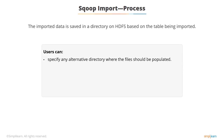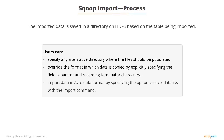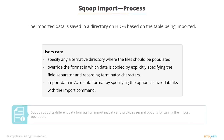By default, these fields contain comma-delimited fields with new lines separating the different records. Users can override the format in which data is copied by explicitly specifying the field separator and record terminator characters. Users can also easily import data in Avro data format by specifying the option as AvroData file with the import command. Sqoop supports different data formats for importing data and also provides several options for tuning the import operation.